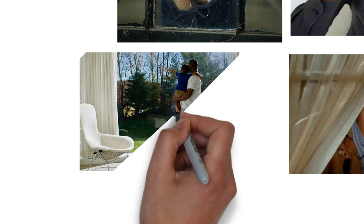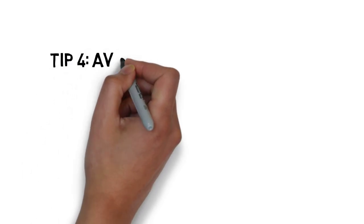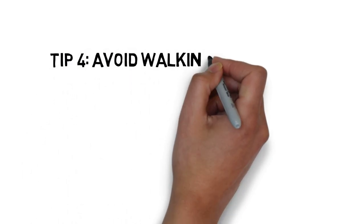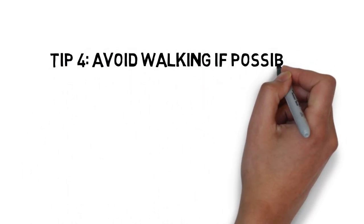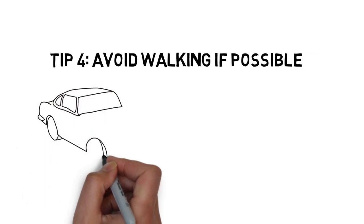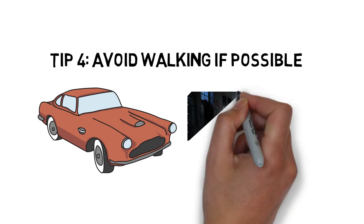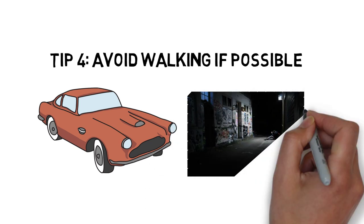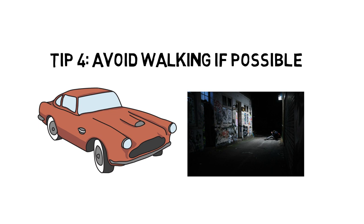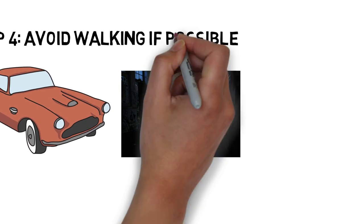Tip number four would be, honestly, depending on how dangerous the area is, you're better off to avoid walking if you can. So Uber or car would be better. And if you do have to walk, definitely might want to avoid that at night because that's kind of a worldwide thing. Walking at night depending on the neighborhood can be a little more risky.